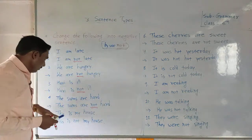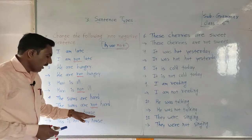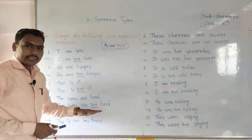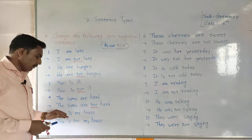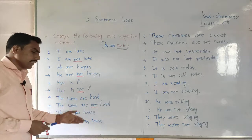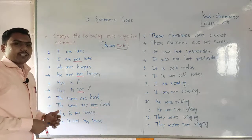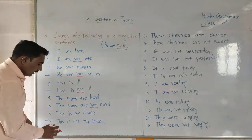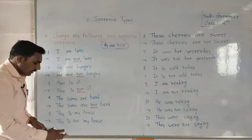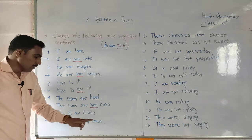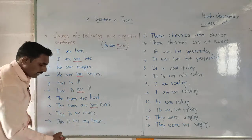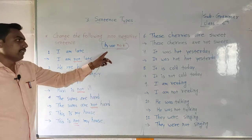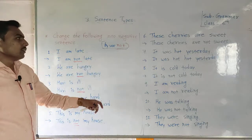Now the next example: 'This is my house.' Change that positive sentence into negative. The answer is: 'This is not my house,' by using 'not.'